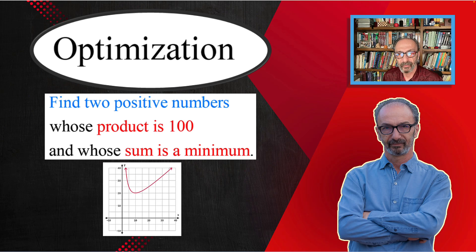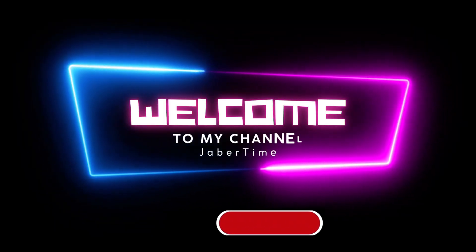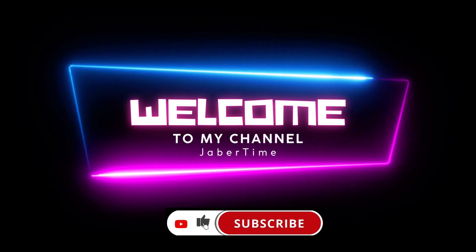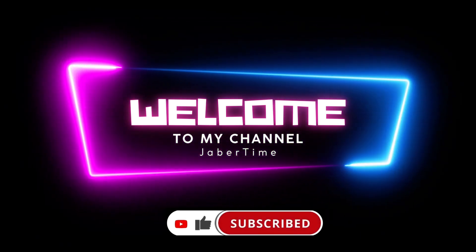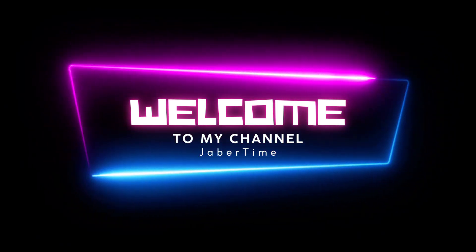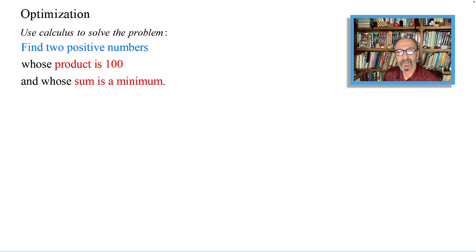Optimization: find two positive numbers whose product is 100 and whose sum is a minimum. Let's get started. To solve the problem we're going to be using calculus to solve the problem, not using trial and error.